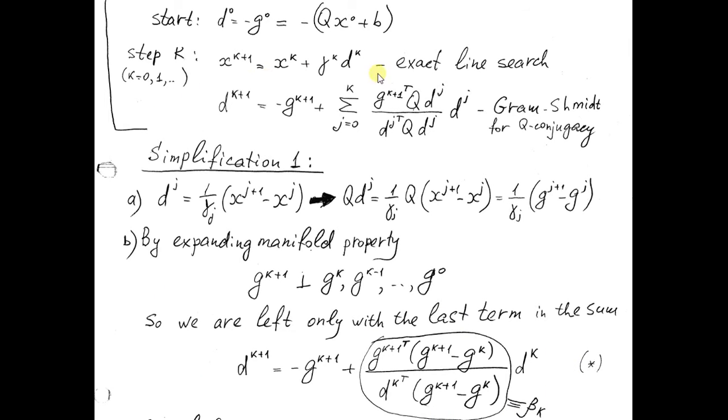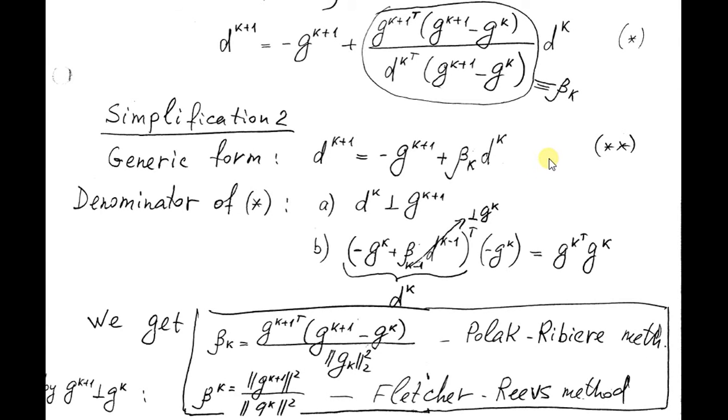So the last expression for dk plus 1 will include only one term. In order to get the second simplification, we will write the expression for new direction in generic form. We will denote the scalar expression multiplying dk as beta k. So dk plus 1 is minus gk plus 1 plus beta k dk.